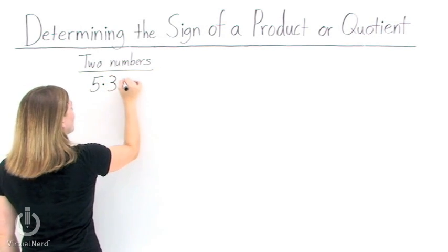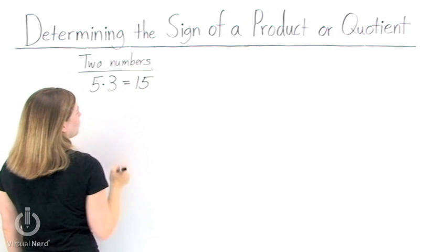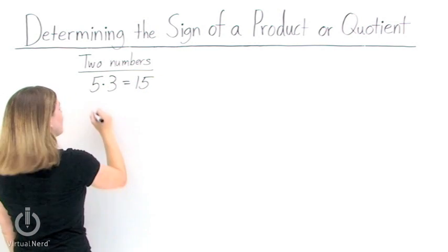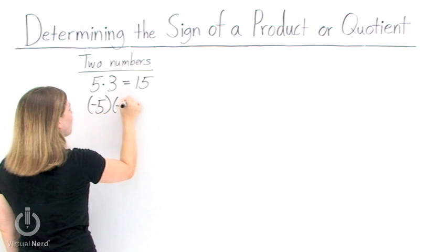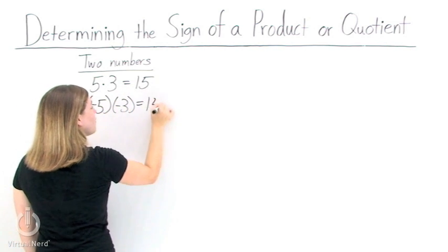Let's take 5 times 3. Well, that's easy. That equals 15. But what if we change the signs, making it negative 5 times negative 3? That equals 15, too.